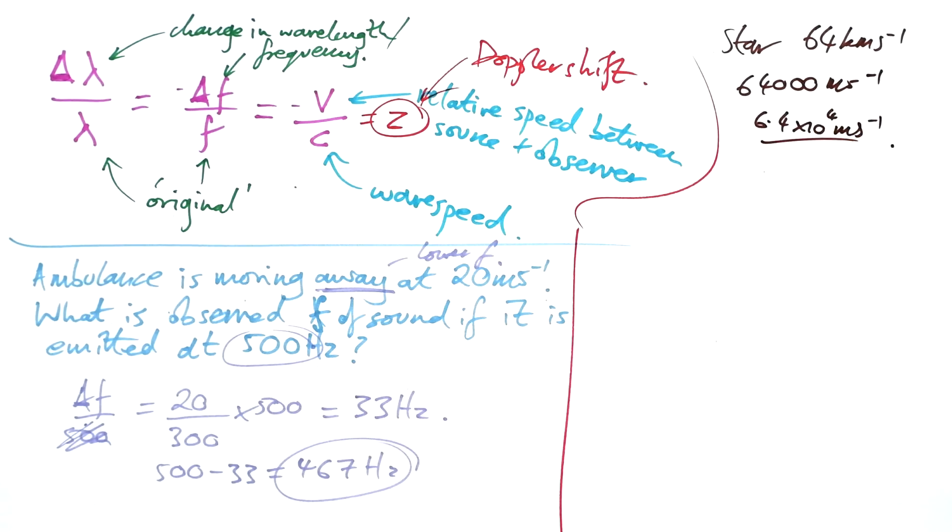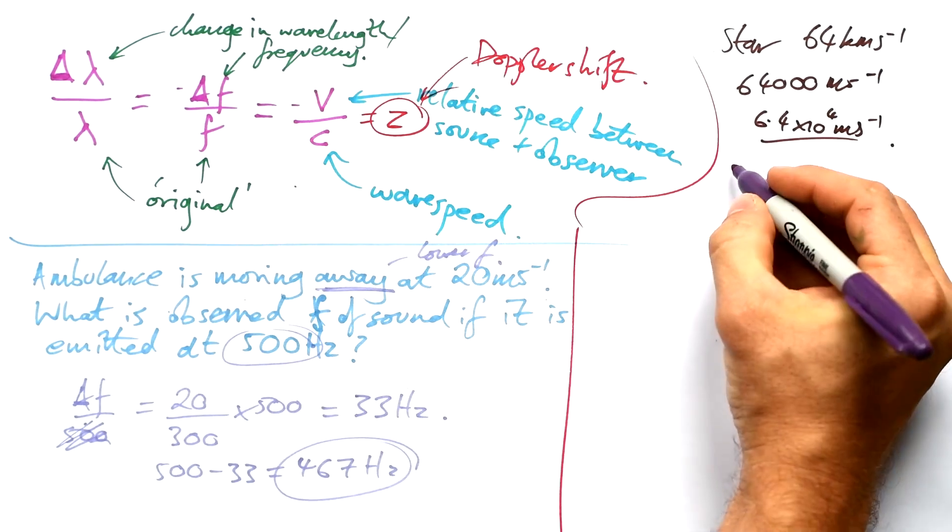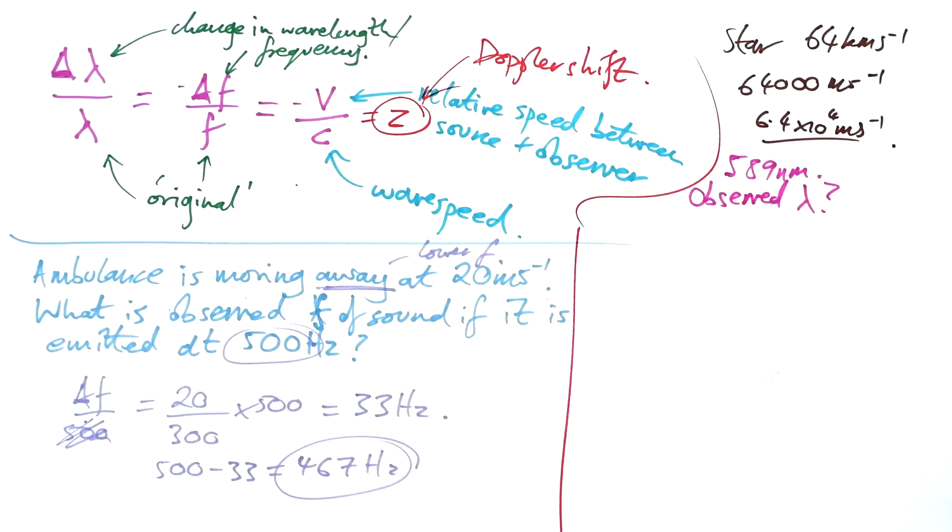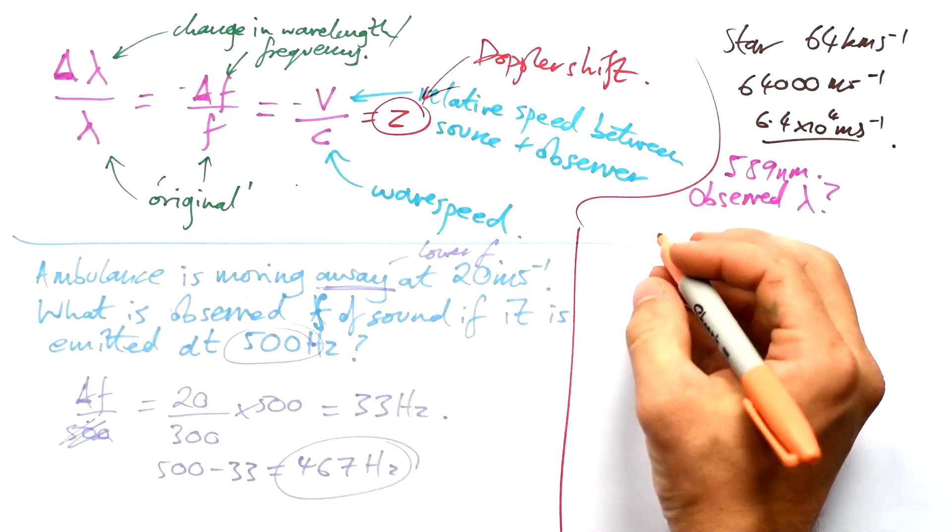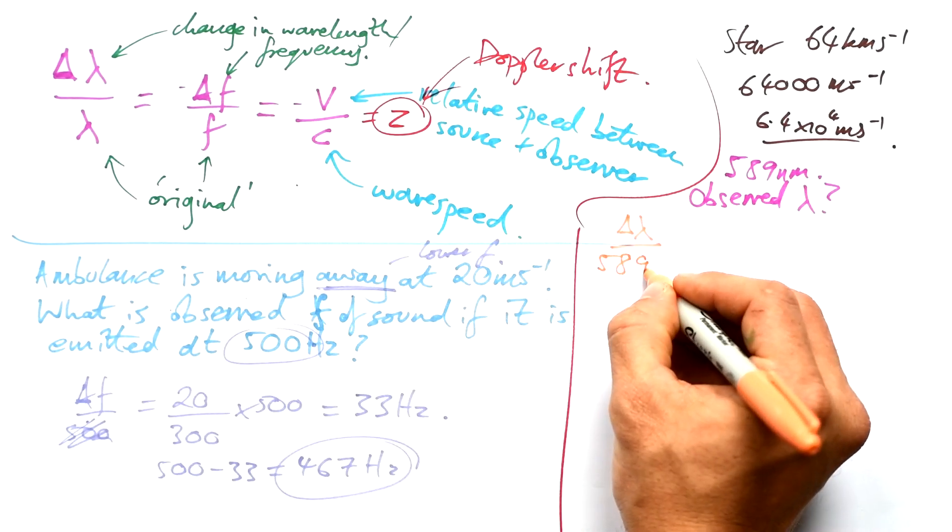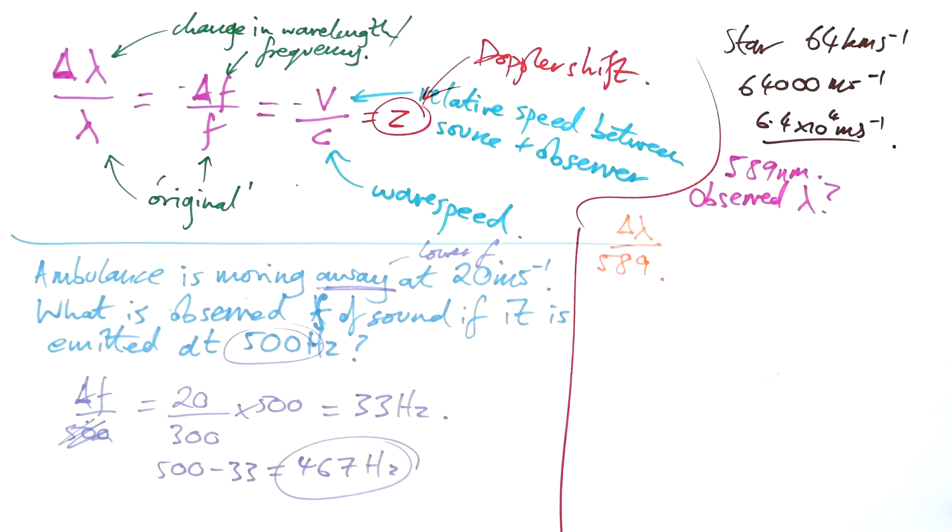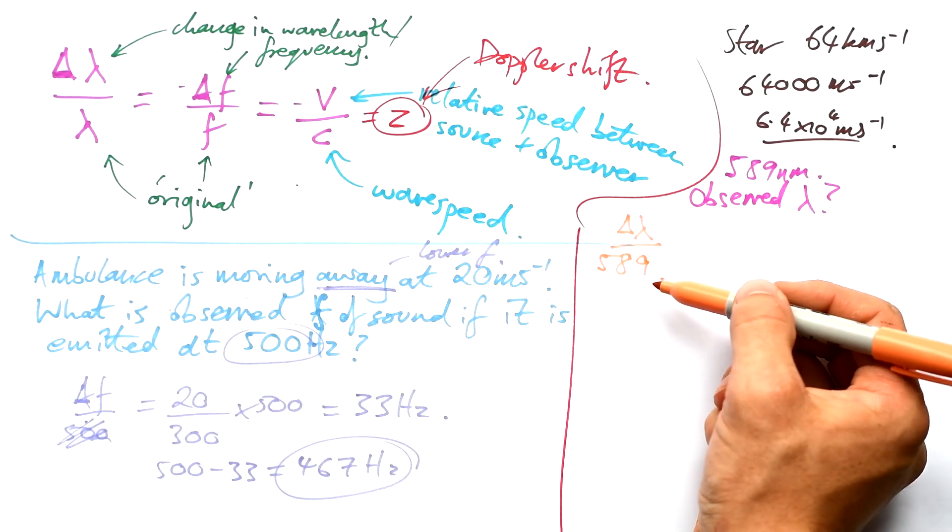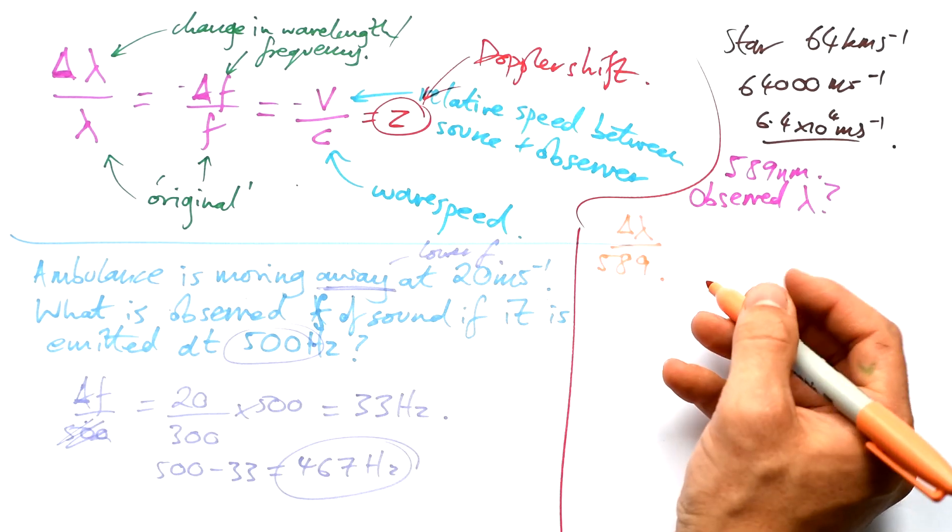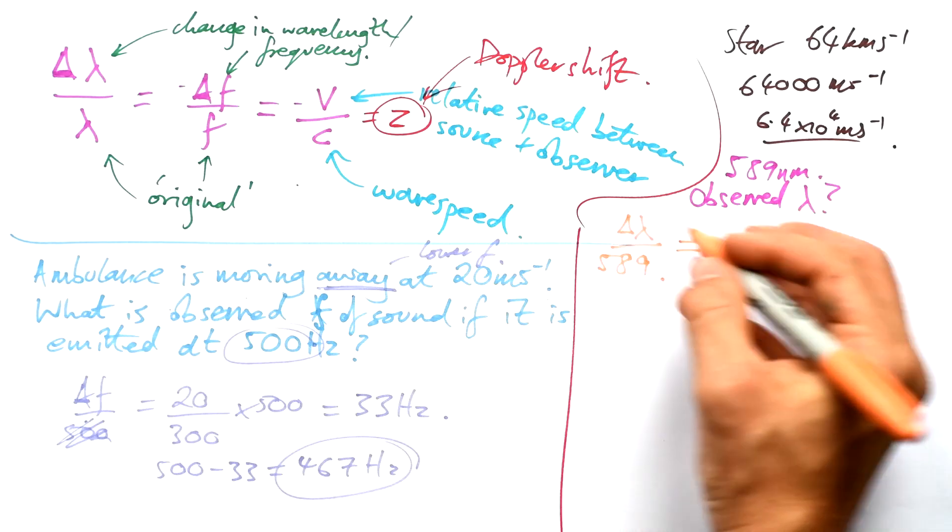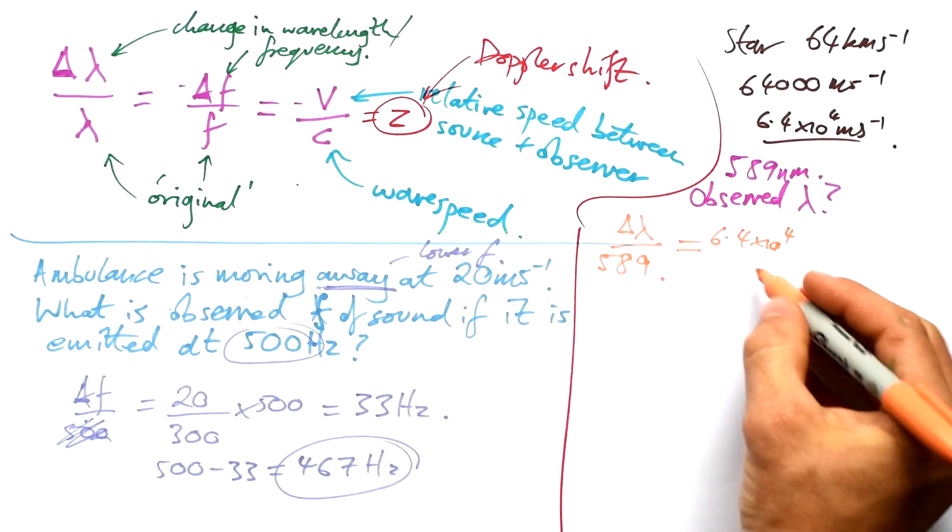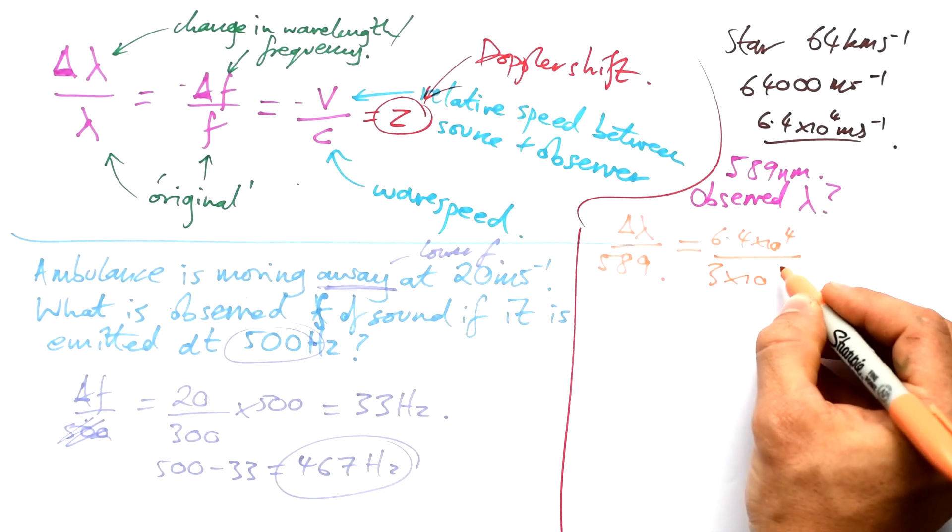Okay so we have our recession velocity. Now a spectral line it emits is at 589 nanometers. What would be the observed wavelength of this spectral line on earth? Again so we're talking about wavelength here so the change in wavelength divided by the original wavelength and that's 589. Now do I need to write down the wavelength in meters? Well no I don't because this is just a ratio. If I use 589 whatever this comes out as is also going to be in nanometers and that's okay. That's a good thing about ratios. Equals, well our velocity is 6.4 times 10 to the 4 meters per second and then we divide that by the speed of the wave which is obviously light so that's divided by 3 times 10 to the 8.